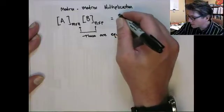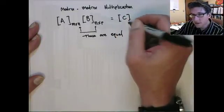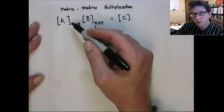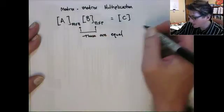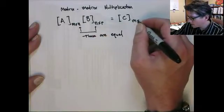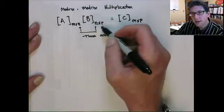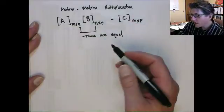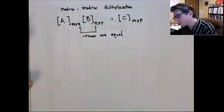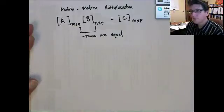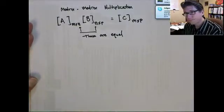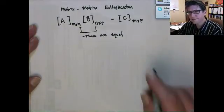So the number of columns in the first matrix has to equal the number of rows in the second matrix. When you multiply those together, you'll get a third matrix, C, and its dimension will be M by P. So you can see the ends kind of negate each other out. And that's the way we... You know, that's because of the way we do the multiplication.